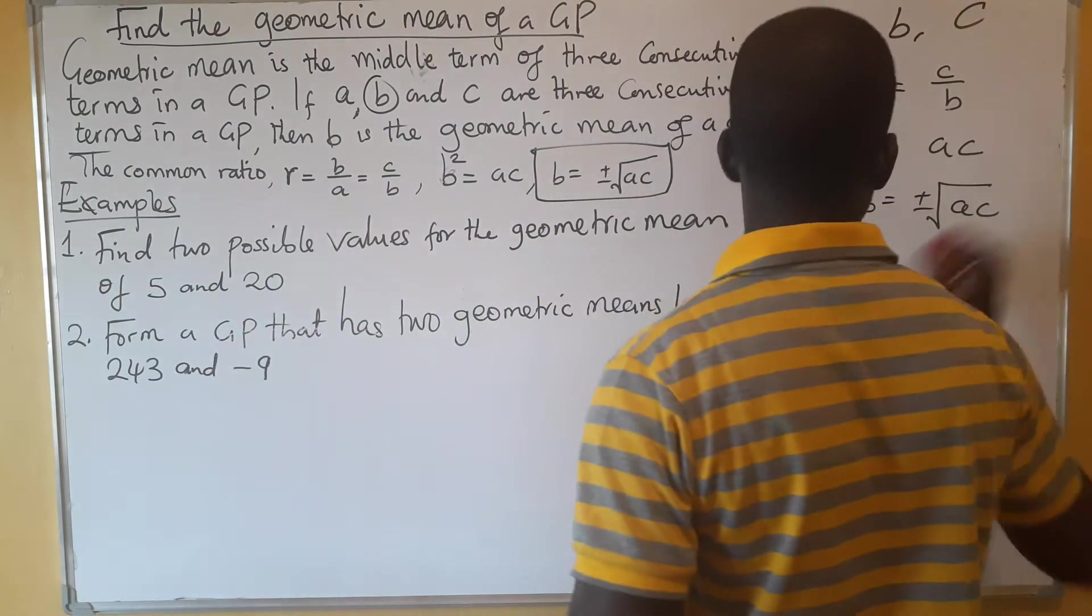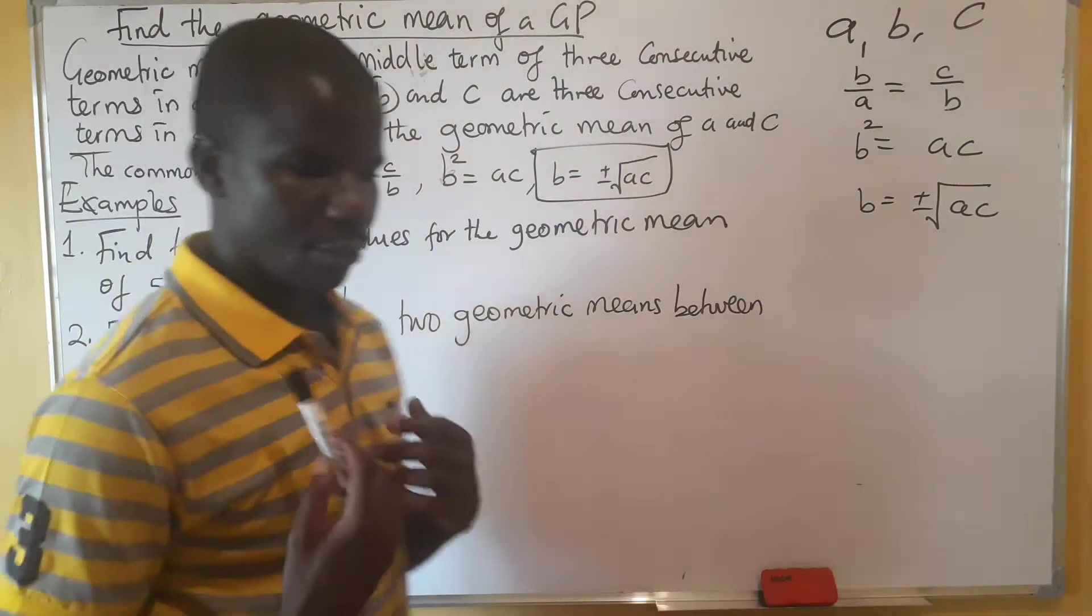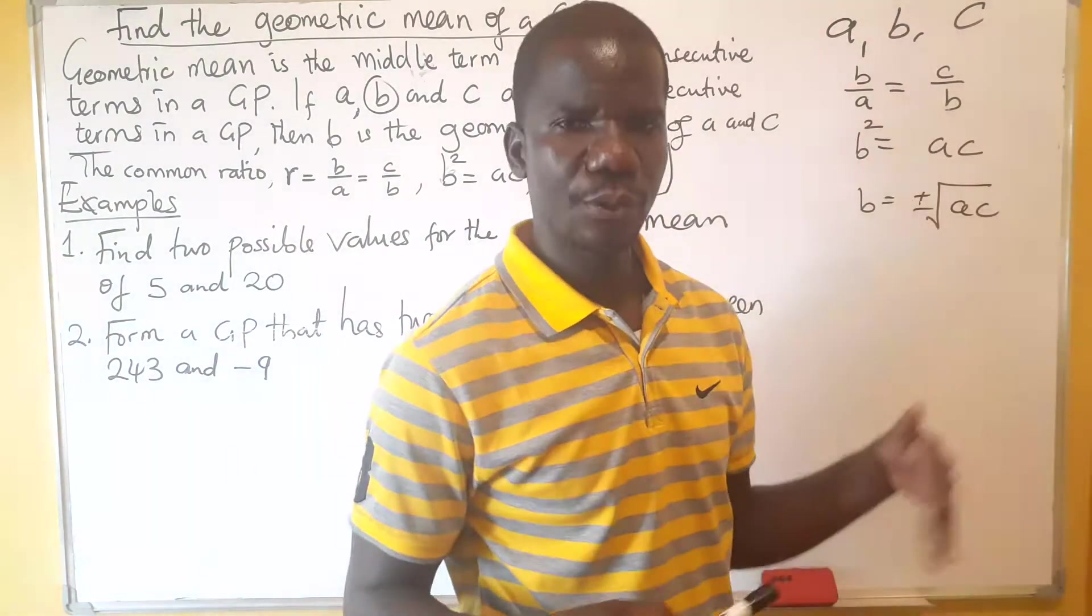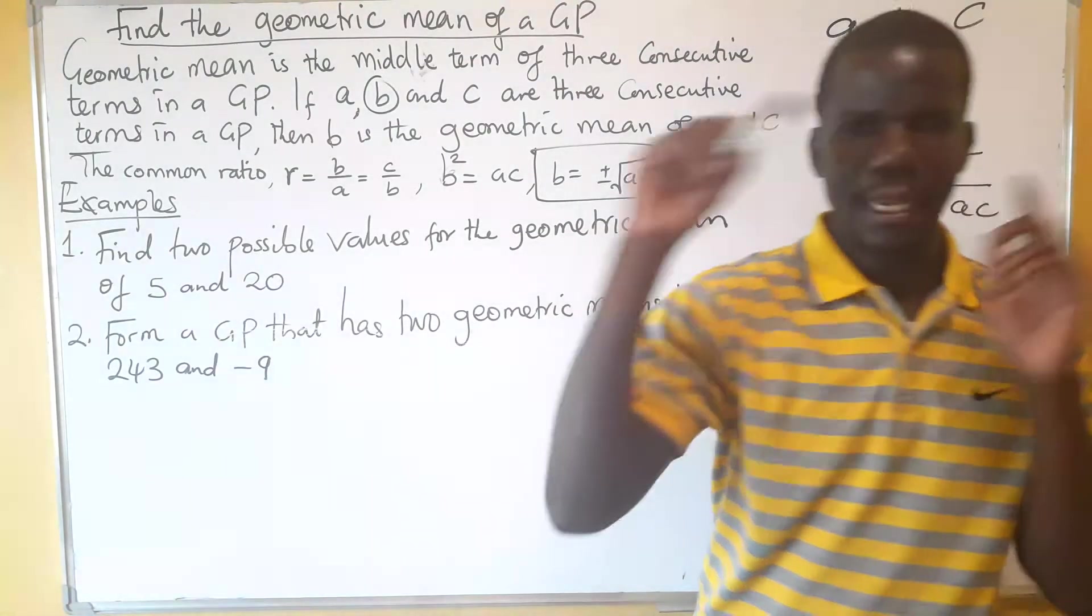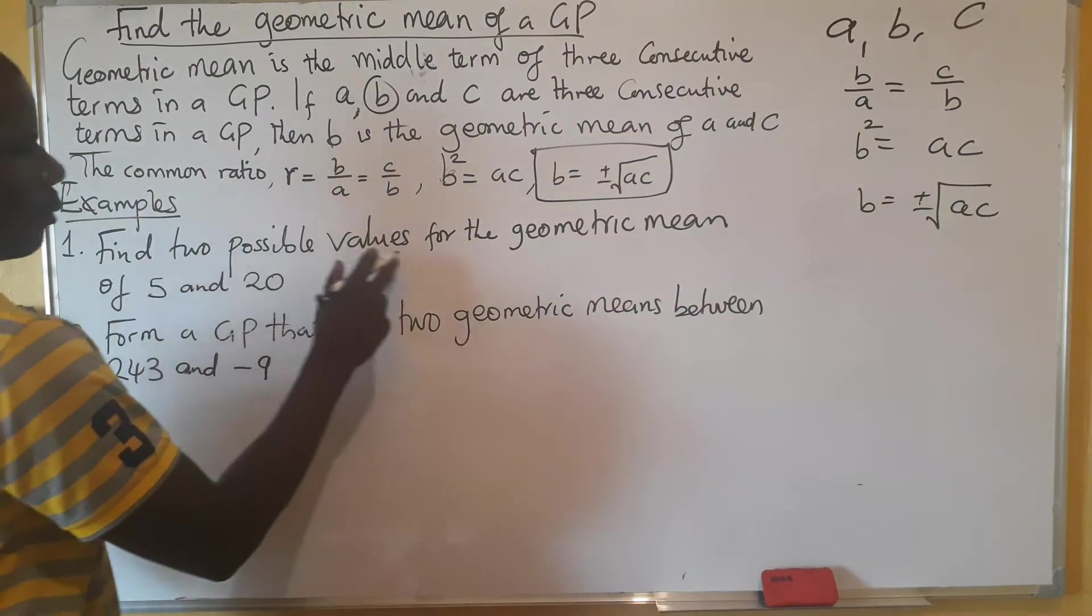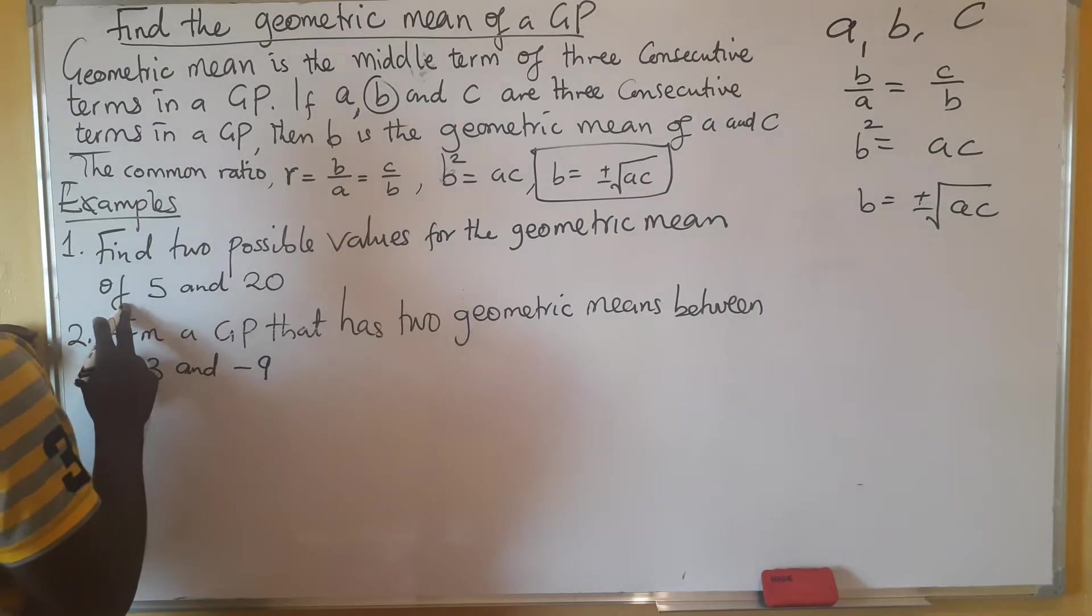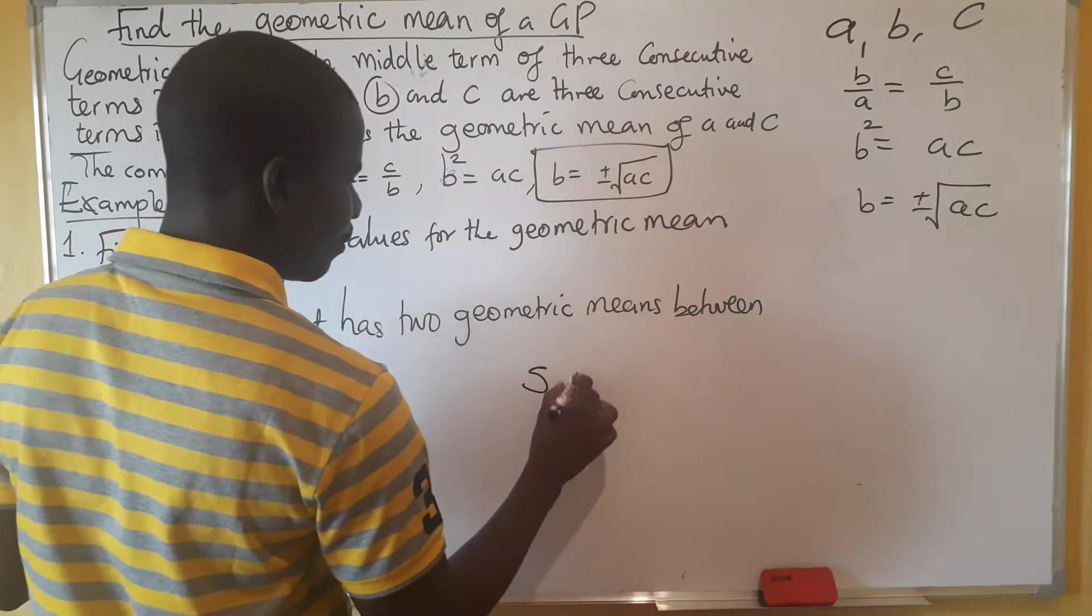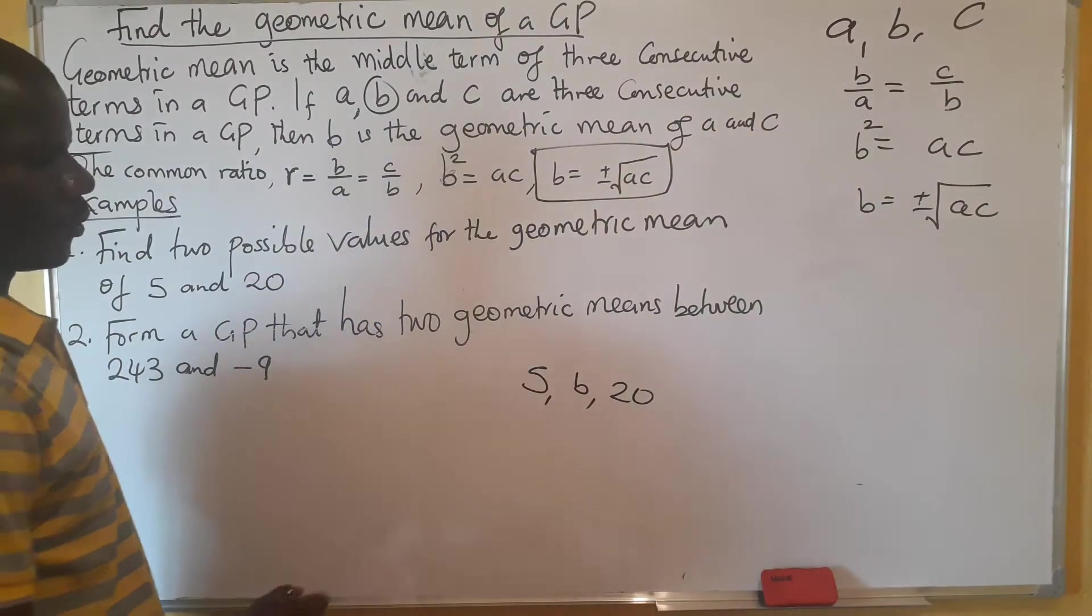Let's look at the examples that we are given. Find two possible values - why two? One will be negative, the other one will be positive, because a root will always give two possible values, a positive and a minus. So here we are saying find two possible values for the geometric mean of 5 and 20.